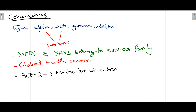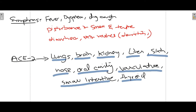ACE2, which is called the angiotensin converting enzyme 2 receptor, is the main mechanism by which coronavirus affects different organs of the body — we'll talk about that shortly. By now, most of us are very familiar with the different symptoms a person experiences when affected by coronavirus. These three are the most common ones.